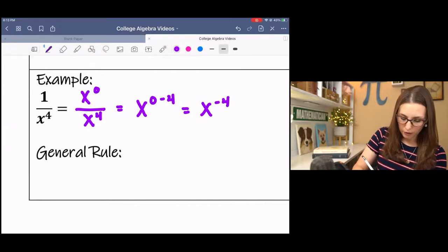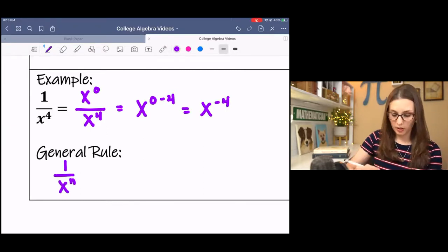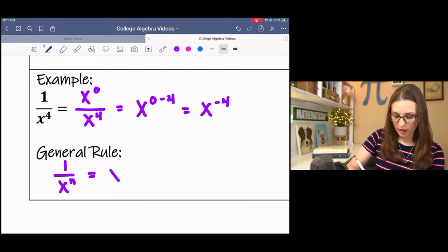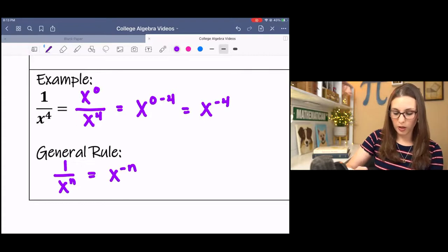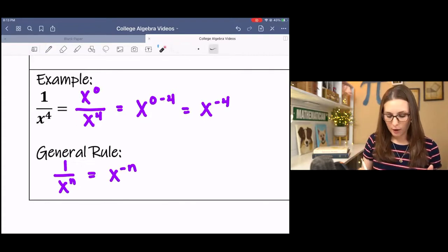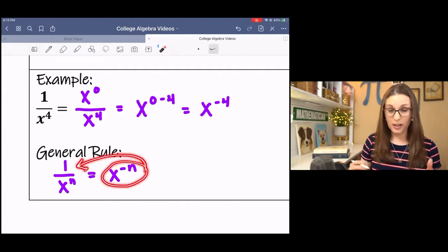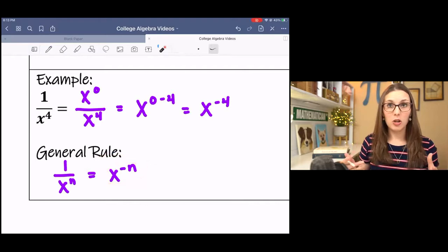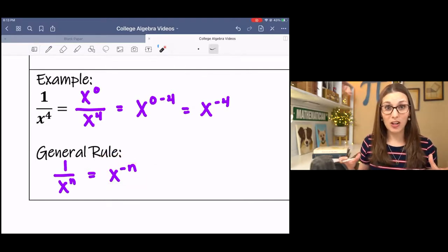So when you have a variable in the denominator with an exponent, that's the same as that variable to the negative exponent. And basically what I was trying not to spoil earlier is that if you have a negative exponent, that indicates that it is a fraction. So a negative exponent does not indicate a negative number. It indicates a fraction.